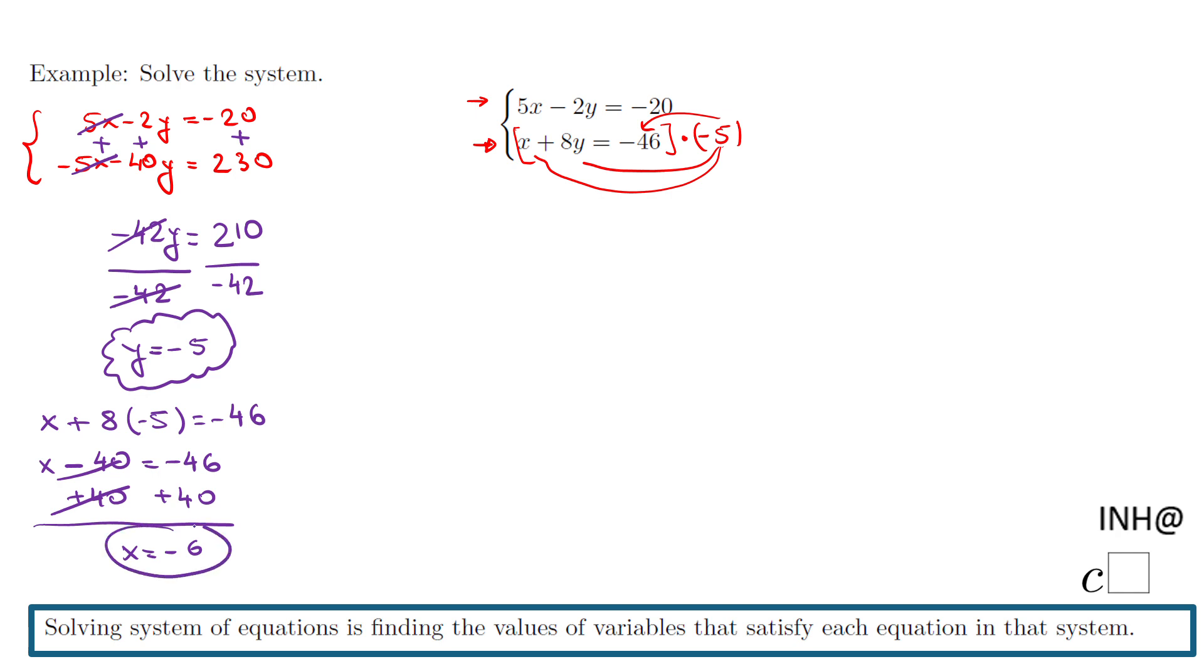This is the solution. And you can write it as an ordered pair also: start with x always, negative 6 and negative 5. This is the solution of this system of equations. And like I said here, if you plug this in, you'll notice that these two values satisfy each equation in that system. You're going to get a true statement.